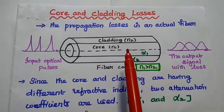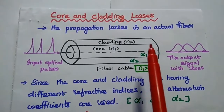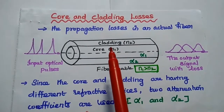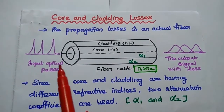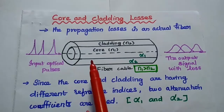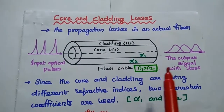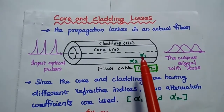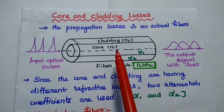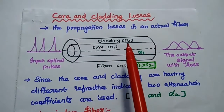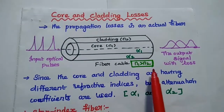Dear students, now we are going to discuss core and cladding losses in detail. The core and cladding losses are the propagation losses in the optical fiber. When we apply input optical pulses to the fiber cable, we get the output with some losses due to the refractive index variation between core and cladding. Here N1 is the refractive index of the core, N2 is the refractive index of the cladding, and N1 is always greater than N2.